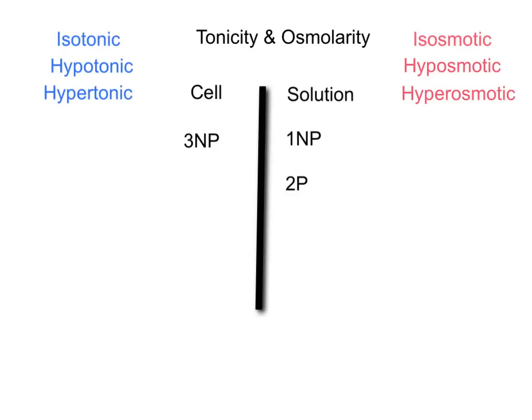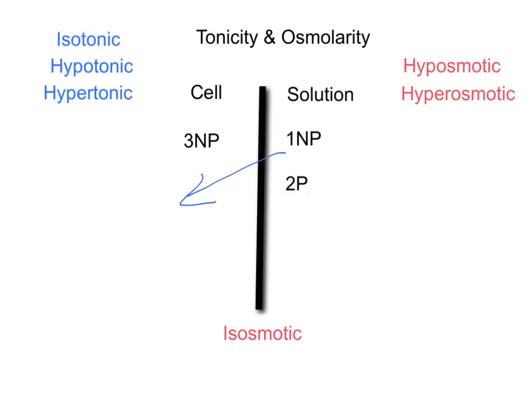In the sixth situation, there is a mixture of penetrating and non-penetrating in the solution. Remembering that it is the sum of all particles that determines osmolarity — we have three in the solution and three in the cell, so the osmolarity is isoosmotic. However, looking at the movement of water, it goes towards the area of higher non-penetrating. The solution has only one non-penetrating particle, so water moves into the cell, the cell swells, making the solution hypotonic.